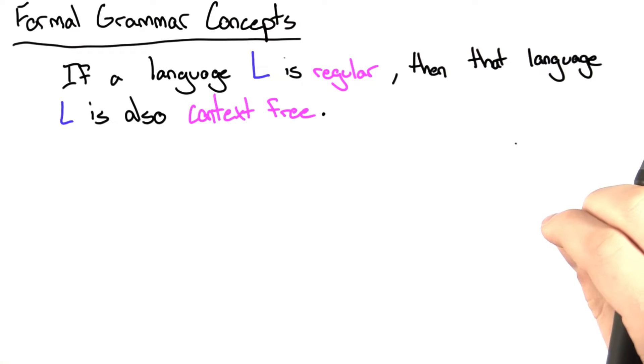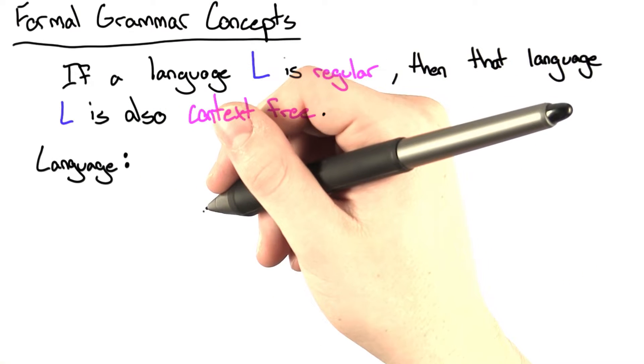This first question asks us to make a few statements about formal grammars. Let's go over a little bit of vocabulary. A language is simply a set of strings.